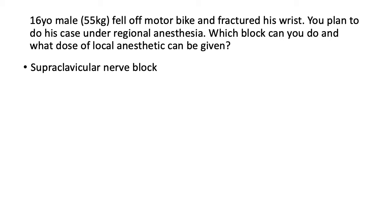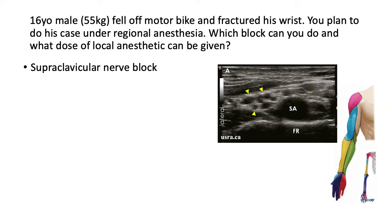A wrist fracture can be managed under a supraclavicular nerve block, which covers everything beyond the shoulder. It may miss the medial aspect of the upper arm, so you may need to supplement with an intercostal brachial block, especially if the surgeons are using a tourniquet. Under ultrasound, you look for the subclavian artery, find the brachial plexus, and always locate the first rib — keeping your target superior to it — while also looking for pleura.